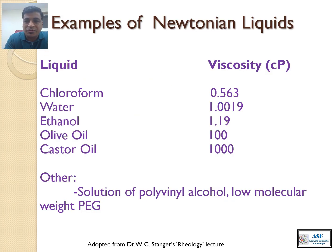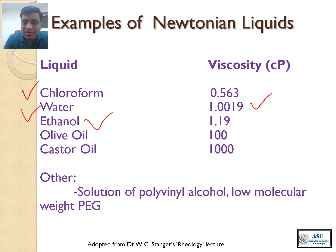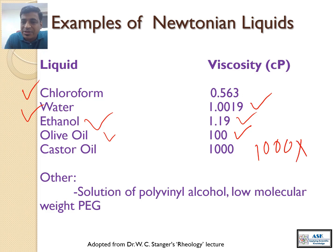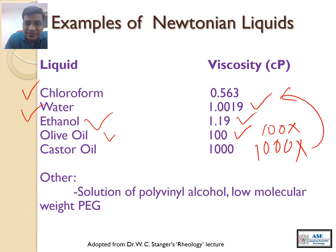What are a few examples of Newtonian liquids and their viscosities? Chloroform has a viscosity of 0.563 centipoise, water is 1.0019 centipoise, ethanol is slightly more viscous than water at 1.19, olive oil is 100 centipoise, and castor oil is 1000 centipoise — almost 1000 times more viscous than water. Olive oil is 100 times more than water, and castor oil is 10 times more than olive oil, making castor oil extremely viscous.